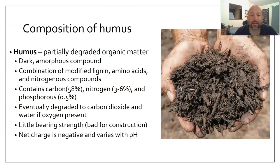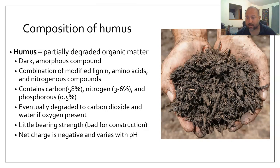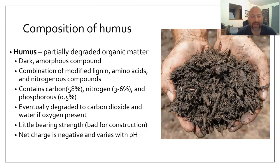So, the composition of humus. Humus — not hummus. Hummus you eat. Humus is partially degraded organic matter. It is a dark, amorphous compound. If you don't know what amorphous means, it means you just don't know what you're looking at. Looking at a picture of humus, I can see some stuff that used to be twigs, some stuff that used to be grass, but there's a bunch of stuff where I don't know what it is. It's a dark, amorphous compound — a combination of modified lignin, which gives structural stability in woody materials, amino acids, and nitrogenous compounds. It contains mostly carbon, with minimal amounts of nitrogen and phosphorus, as well as oxygen and other things.